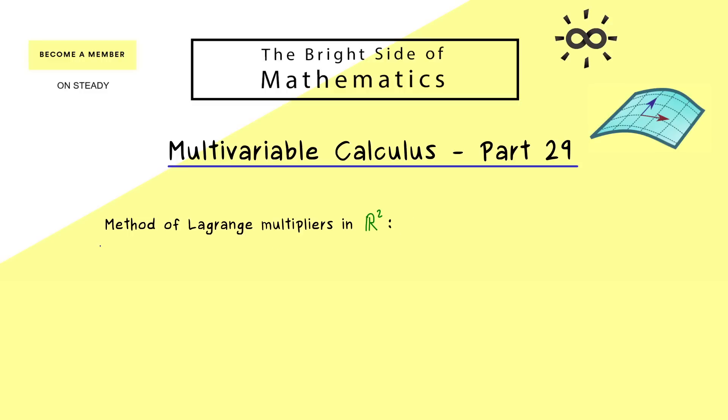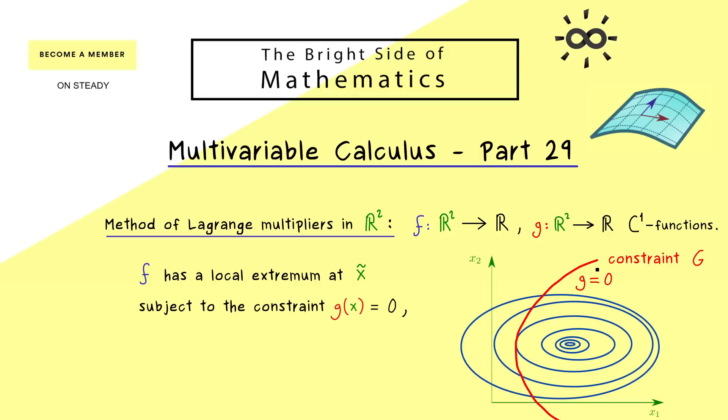With that said, let's recall the method of Lagrange multipliers in R². As mentioned in the last video, we discussed this two-dimensional case first because it's easy to visualize. So what we have here is just two C¹ functions where function f is the one we're interested in and g gives the constraint. More precisely, the constraint is given for the points x that satisfy g(x) equals 0.